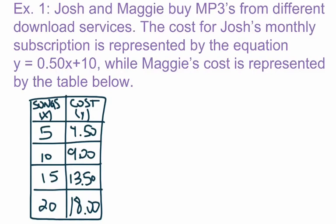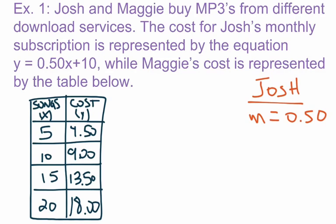We know that an equation is y equals mx plus b, so here y equals 0.50x plus 10 means m is 0.50 and b is 10. For Josh, the slope is 0.5 and the y-intercept is positive 10. That's all we have to do for that equation — we don't have to do any more work there.